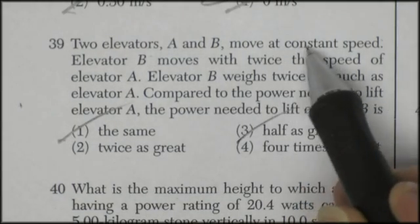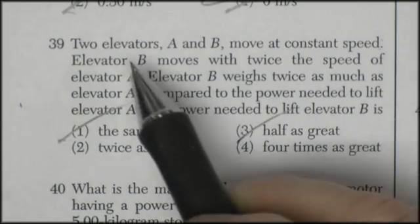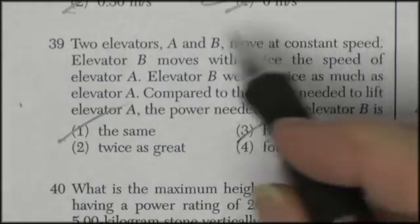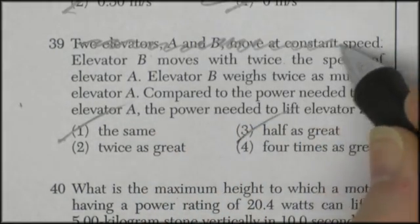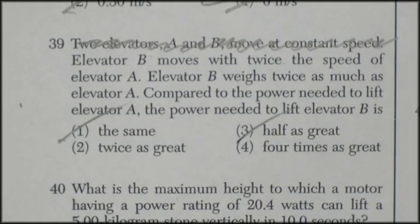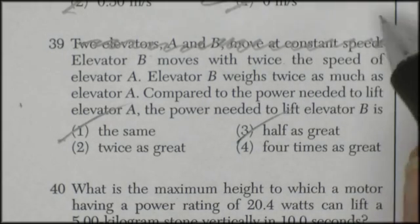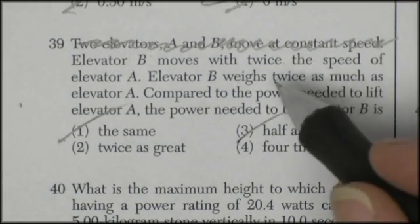Two elevators, A and B, move at a constant speed. Elevator B moves with twice the speed of elevator A. So basically, this sentence doesn't make any sense. They move at constant speed. If it had twice the weight,